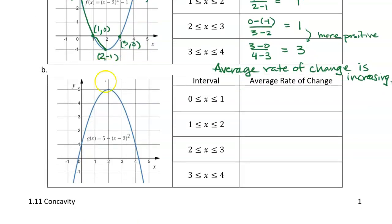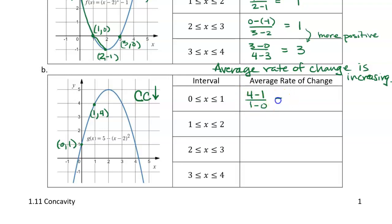Now let's look at the concave down case — I'll abbreviate that as CC with a down arrow. Over the interval from 0 to 1, the points are (0, 1) and (1, 4). The average rate of change is (4 − 1) / (1 − 0), which is 3. For the next interval from 1 to 2, the point is (2, 5), giving (5 − 4) / (2 − 1) = 1.